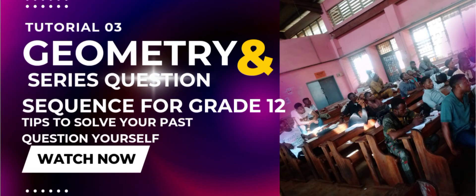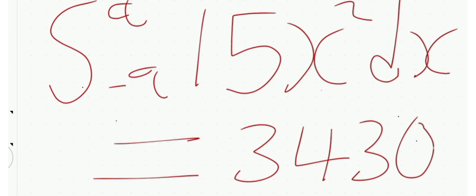Given the integral of 15s² equals 3430, find the value of the constant a. Option a is 8, option b is 6, option c is 7, option d is 9. I'll give you some time to try to solve this.